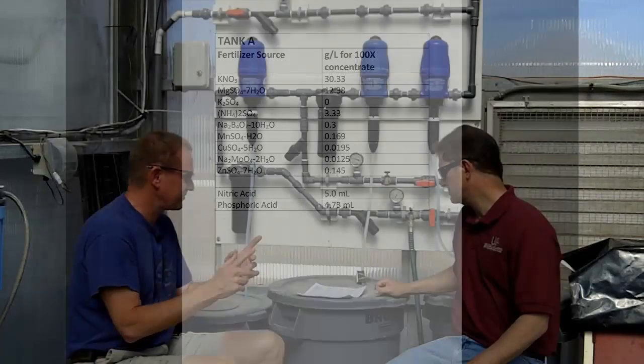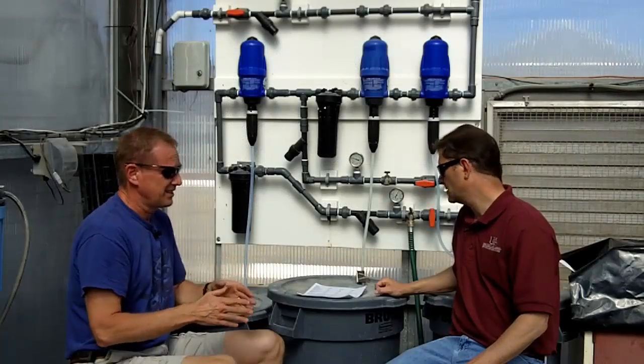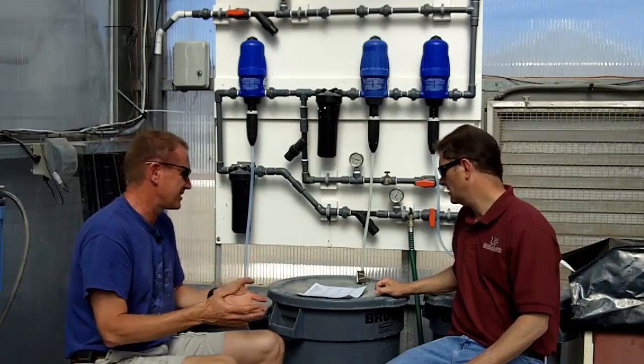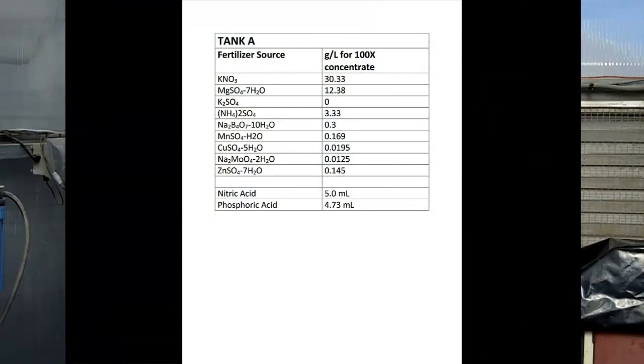So that completes our A tank, except for the acids that we add. Our water happens to have a fair amount of carbonate, so we always need to add some acid. We use nitric acid, and we add that at 5 mils per liter in our stock tank. And that contributes not just the acidification, but also the nitrate form of nitrogen, and we account for that. And we're adding phosphoric acid, and that is our sole phosphorous source in our A tank. And we're adding that at 4.7 mils per liter of stock.